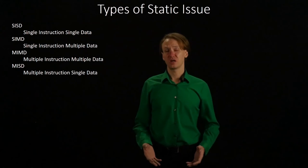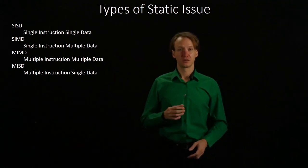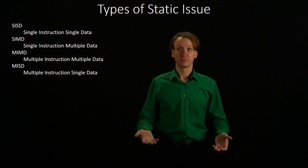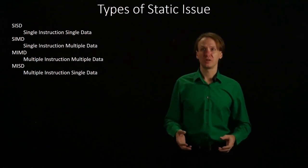There are four different types of static issue processors that we can consider. We've already looked at what a single instruction, single data processor is — each cycle, we issue one instruction, it has one set of data that it works with, performs that operation on the one piece of data, and completes. The type of static issue processor we've just looked at would be a multiple instruction, multiple data architecture, where we have multiple instructions and they're each using their own different pieces of data. This is not the most common architecture, but it is one that we still build.